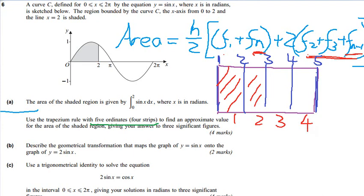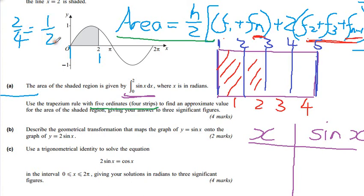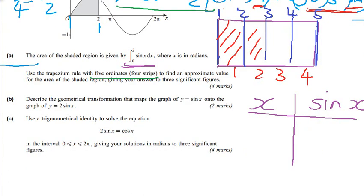So then what we can do is say, we've got our equation, we've got our definition of ordinates and strips. We want to find an approximate value for the area of the shaded region. Let's make ourselves a little table here. We're going to have x on one side, and because this graph is sine of x, we're going to have sine of x on the other side. Then we need to go between 0 and 2, and we need to have 4 equal strips. So what's 2 over 4? That's going to be a half.